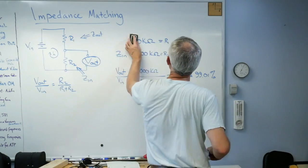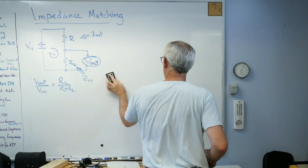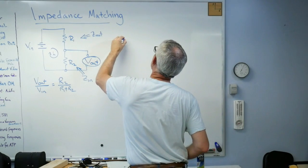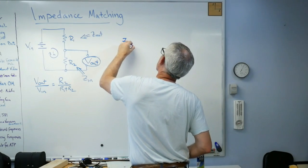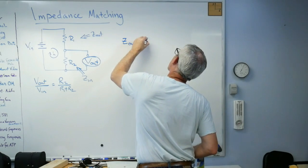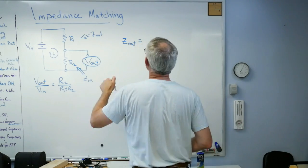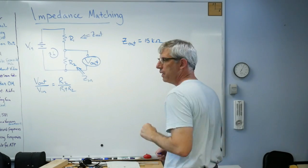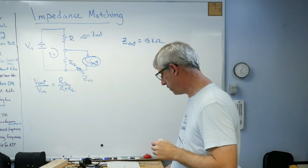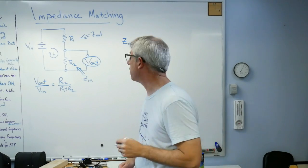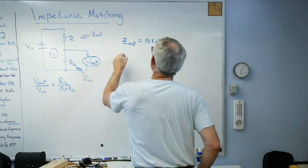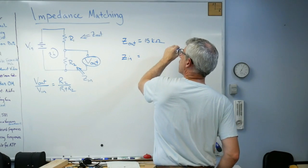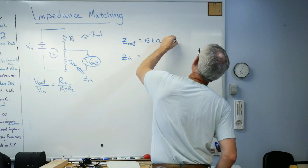So you get the idea here. Here's the problem with the headphones. Let's change these numbers. Let's say Z_out on the guitar is 15k. That's not that unusual. Okay, 15 kilo ohms. The resistance on a pickup could easily be that much.